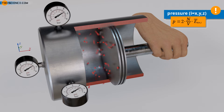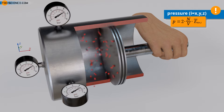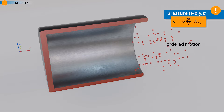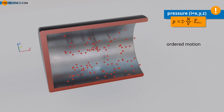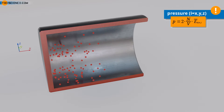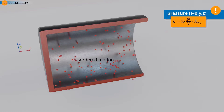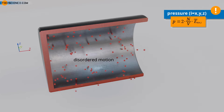The equipartition theorem is a consequence of the random statistical motion of the molecules. These chaotic movements lead to continuous collisions in which molecules subsequently move in different directions. In this way, originally ordered motions quickly become disordered, with no direction being preferred, resulting in an equal distribution of speed and energy. The equipartition theorem is not limited to translational motion but applies to all forms of energy at the atomic level, such as rotation and oscillation.